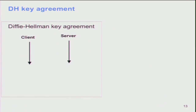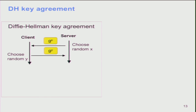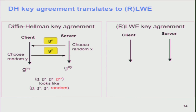I'll briefly remind you how the Diffie-Hellman handshake works, because LWE-based handshakes are very similar. In Diffie-Hellman the server picks random x and sends g^x to the client; the client chooses random y and sends g^y back; both can then compute g^{xy}. The security assumption is that given g, g^x, and g^y — exactly what an eavesdropper sees — you can't distinguish g^{xy} from random. In other words, the adversary cannot guess the shared key better than by random guess.